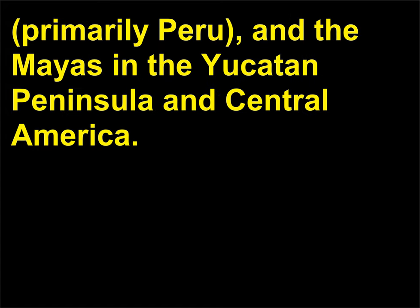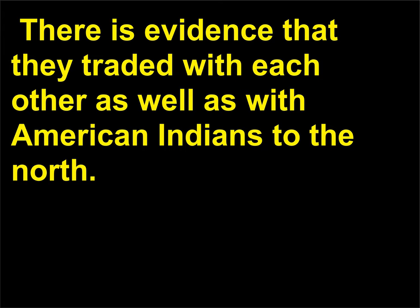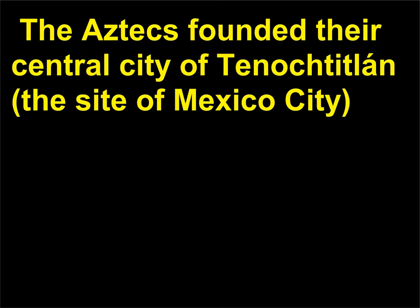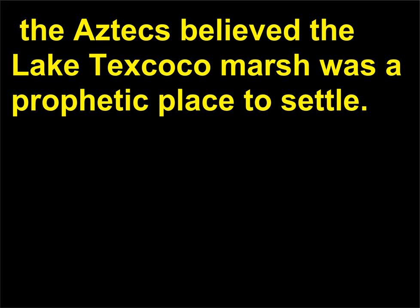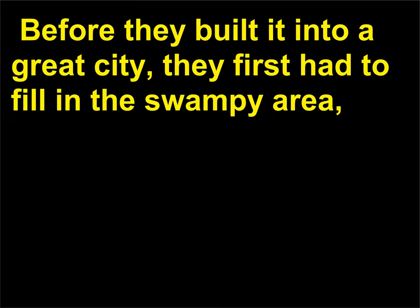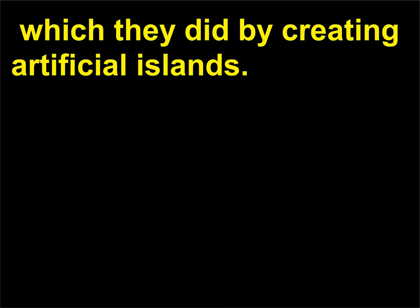Primarily Peru, and the Mayas in the Yucatan Peninsula and Central America. There is evidence that they traded with each other as well as with American Indians to the north. The Aztecs founded their central city of Tenochtitlan — the site of Mexico City — about 1325. A poor nomadic people before their arrival in Mexico's central region, the Aztecs believed the Lake Texcoco marsh was a prophetic place to settle. Before they built it into a great city, they first had to fill in the swampy area, which they did by creating artificial islands.